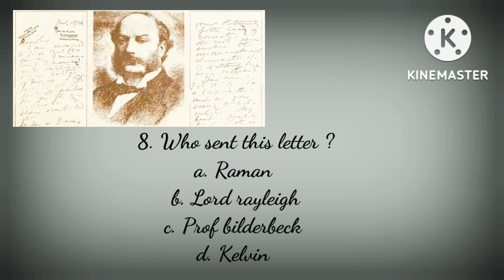Now here is a picture-based question. You can find an image of a letter on screen, and you have to answer: who sent this letter? Options are: Option A: Raman, Option B: Lord Rayleigh, Option C: Professor Bilderbeck, Option D: Kelvin. The correct option is Option B — Lord Rayleigh sent this letter to Raman.